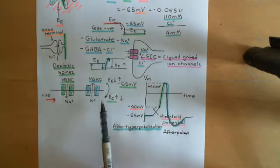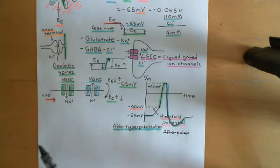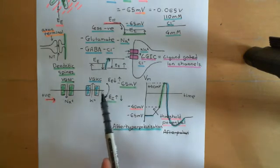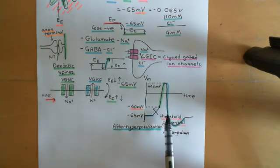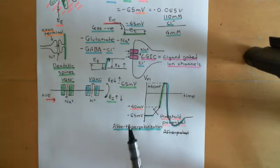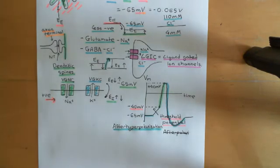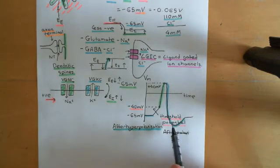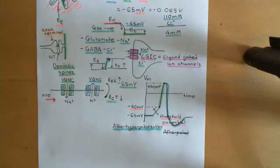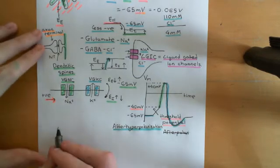Part of it can be explained by the voltage-gated potassium channels remaining open for a little bit longer before they're actually getting around to closing — because we're back below the negative 40 millivolts. But it's very large here, and in fact there's another type of potassium channel that's important: the calcium-activated potassium channels.